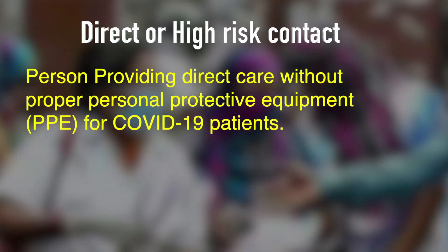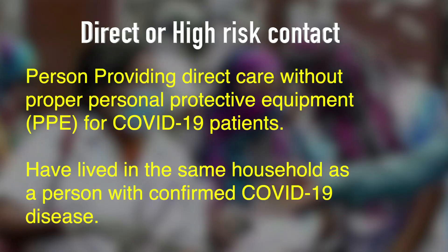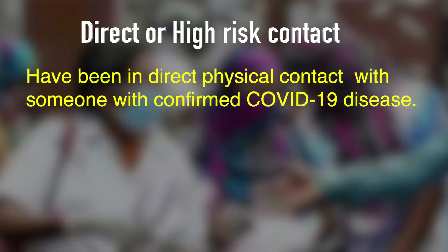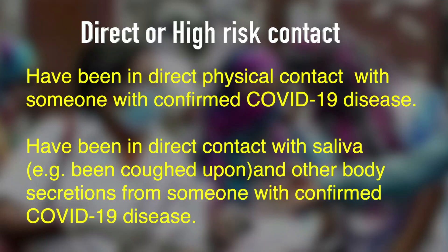Who are the high risk contacts? They are the close contacts of the COVID-positive patient — persons providing direct care without proper personal protective equipment for COVID-19 patients, those who have lived in the same household as a confirmed COVID-19 case, those who have had direct physical contact with a confirmed case, and those who have been in direct contact with body secretions like saliva, vomit, or diarrhea, without taking precautions such as washing hands.